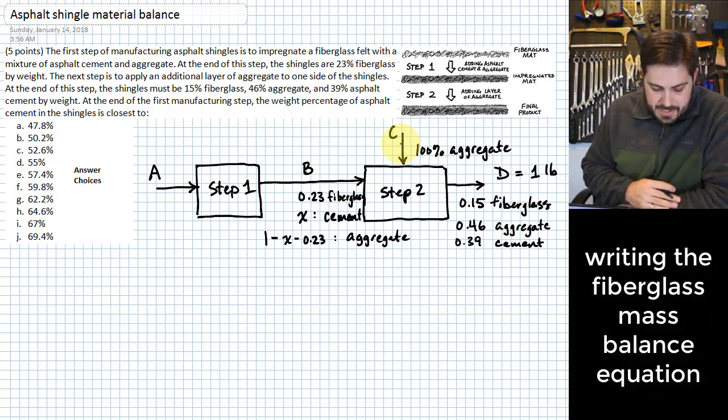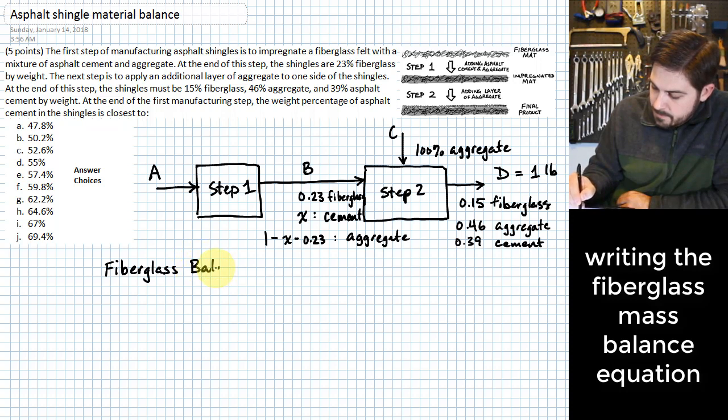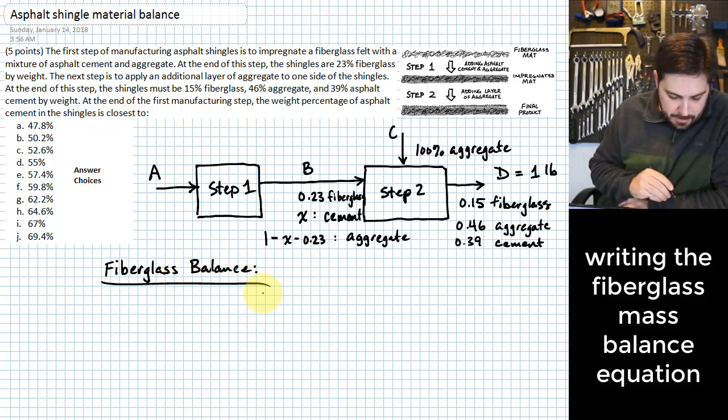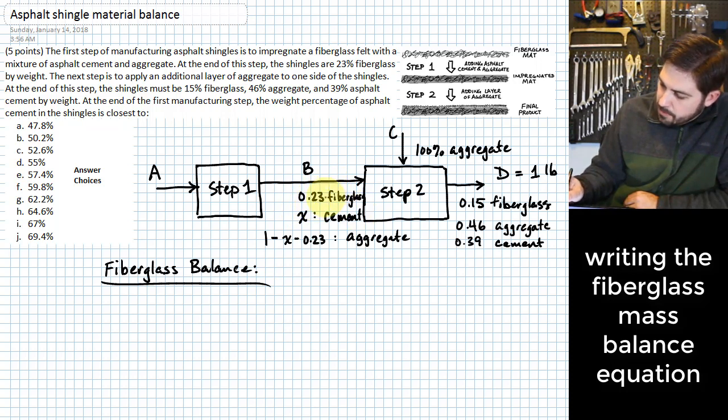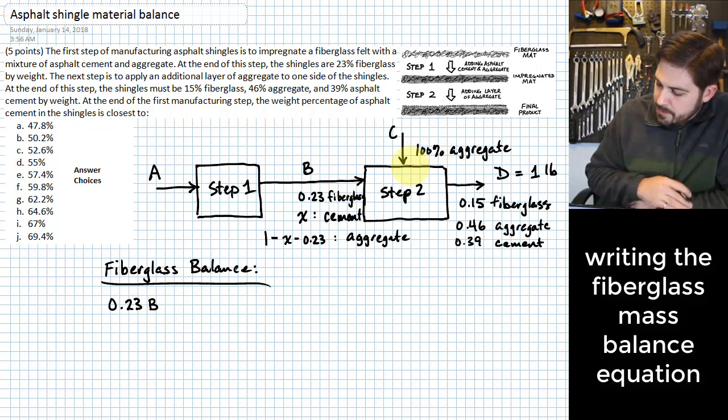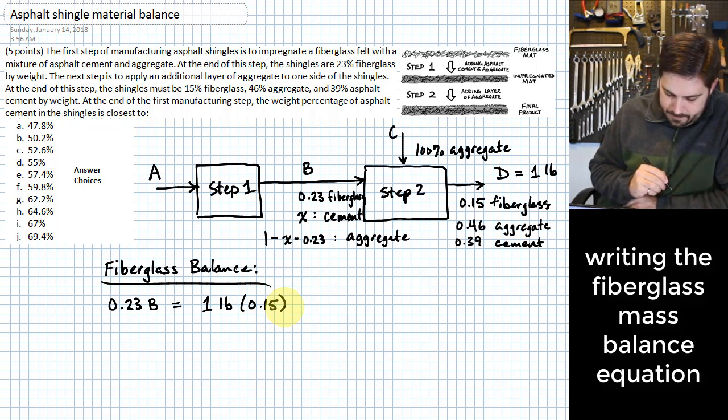And for this fiberglass balance, I've got, if you think about this, I have 0.23 times B of fiberglass. We don't have any material coming in on this other stream. And so this had better equal one pound times 15% fiberglass.